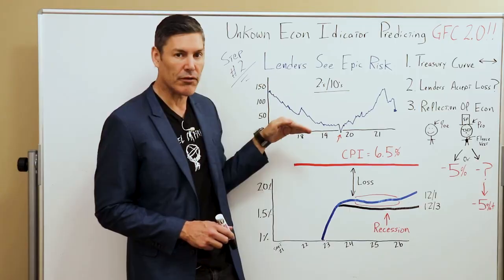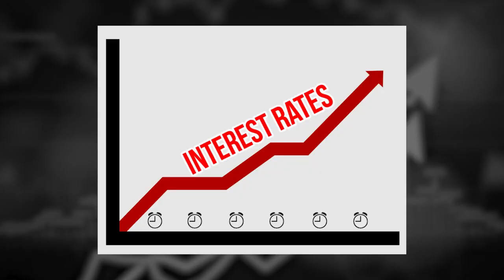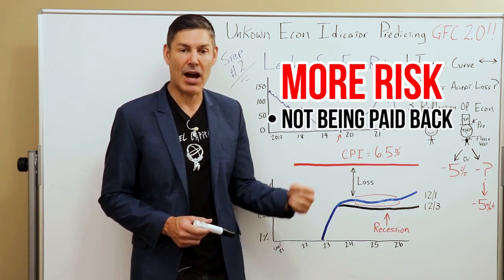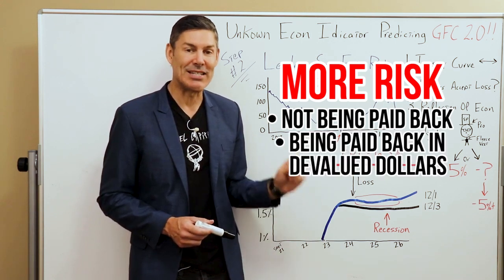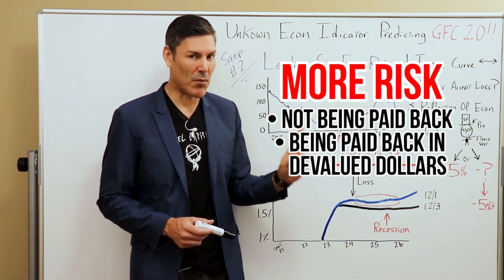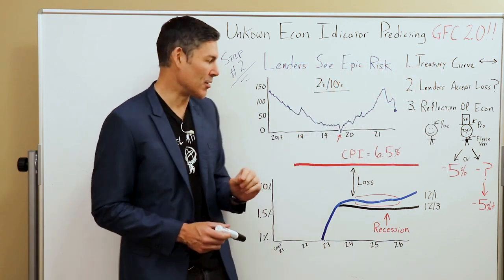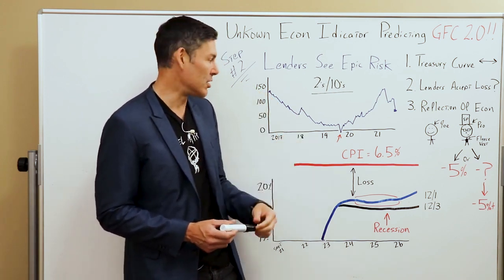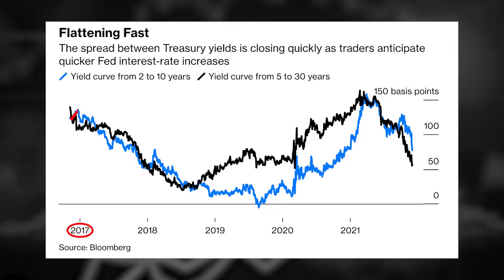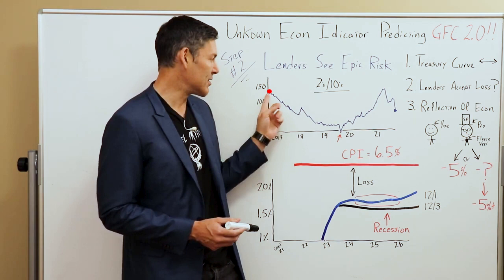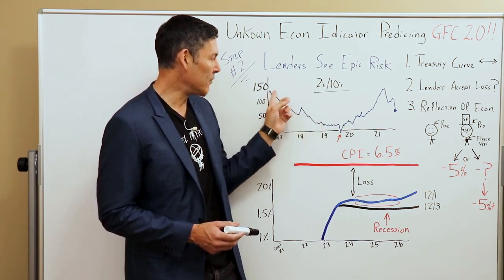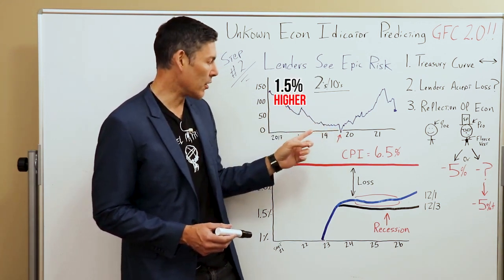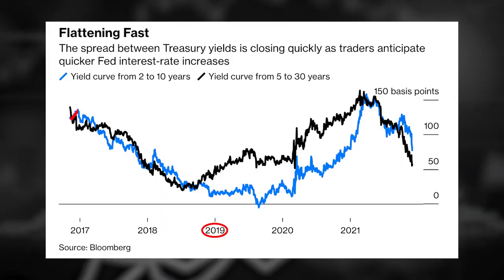Remember, in a healthy yield curve, the interest rates are higher as we go out into the future, which makes sense because the longer you lend your money out, the more risk you have of not being paid back, or being paid back in devalued dollars — we have to remember inflation. On the left, we go from zero basis points up to 150 basis points difference between the ten-year and the two-year. In 2017 there was a 150 basis point difference, meaning the ten-year was 1.5% higher than the yield on the two-year. But as we get closer to 2019, it starts to drop.